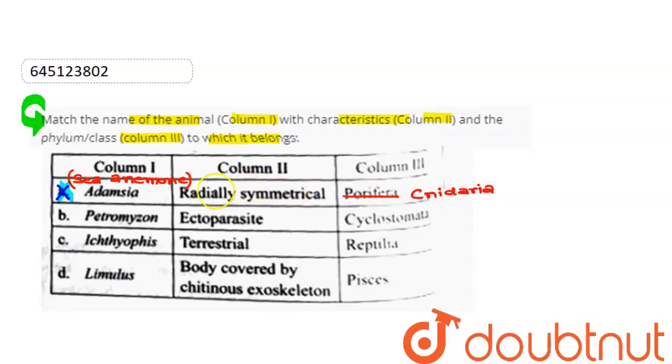Okay, after that, let's see. Second, which we have given is Petromyzon. And ectoparasite, which we have given it. And Cyclostomata, which we have given it.